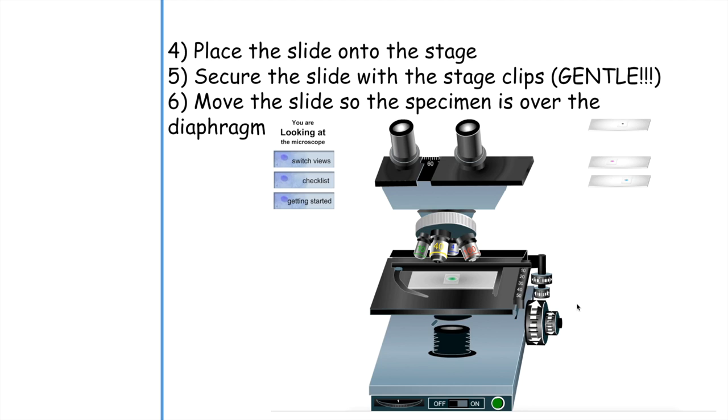There are microscopes that do not have this contraption where you use knobs to move the slide. Most commonly found in classrooms is that there are no knobs to move the slide up and down. You would have to move the slide with your fingers, using your thumbs to gently move it where you need it to be, then re-secure the stage clips to the slide.